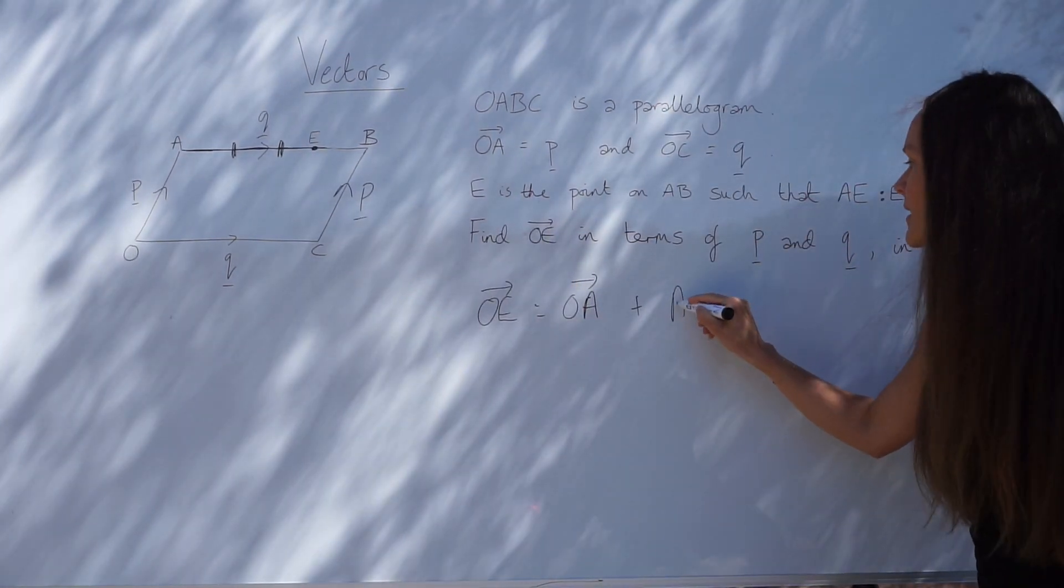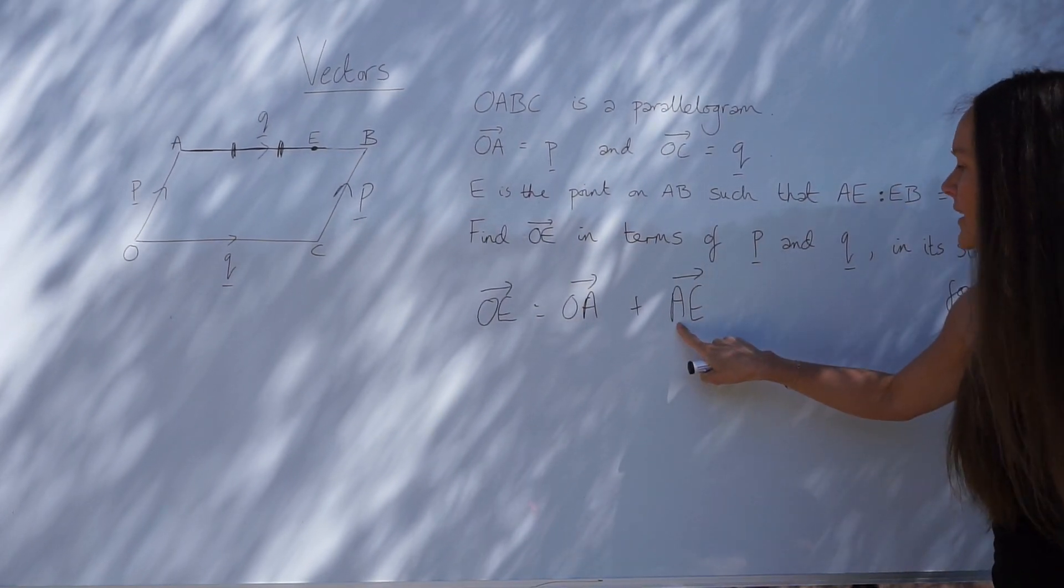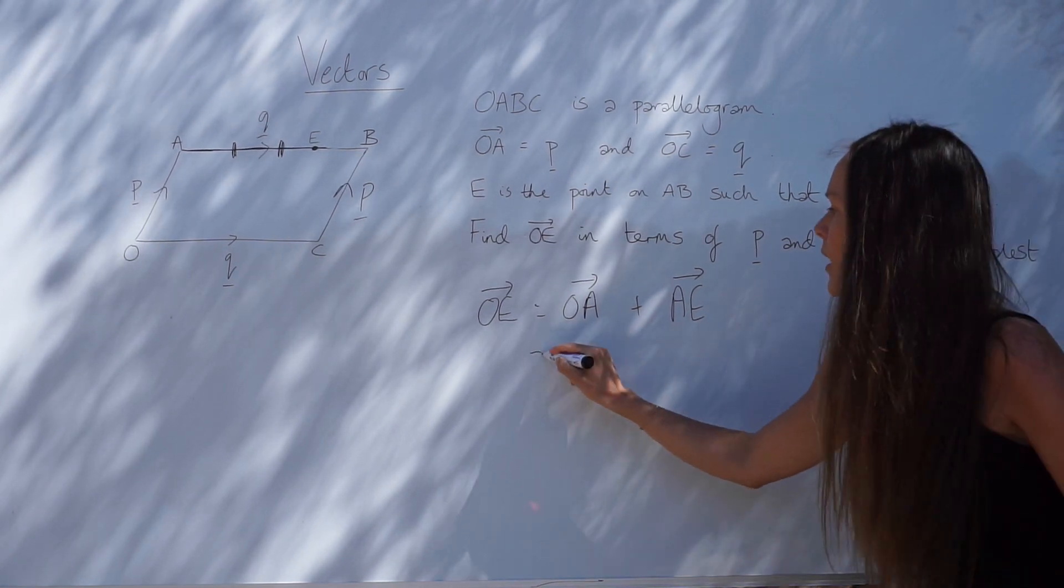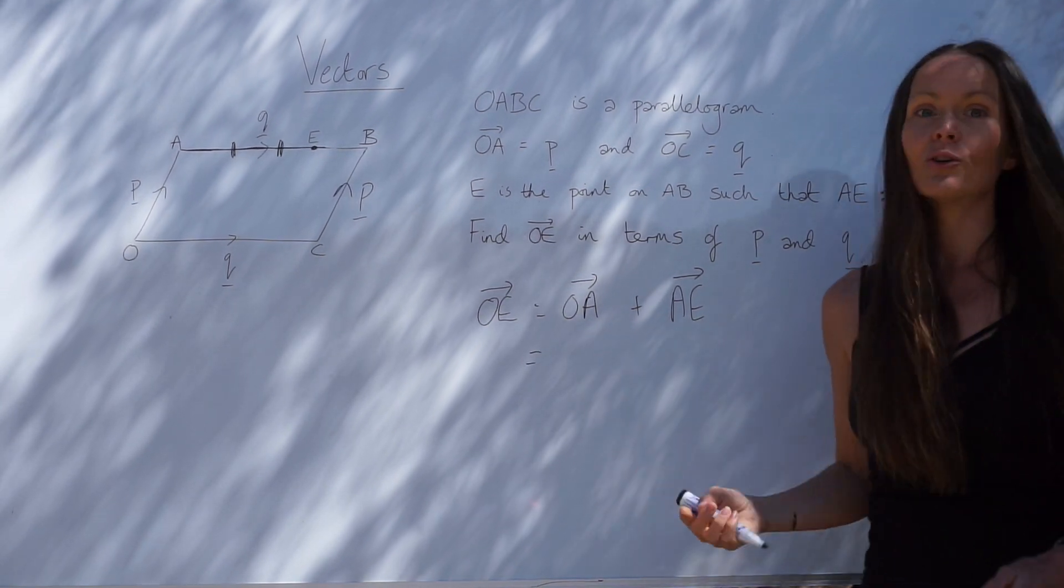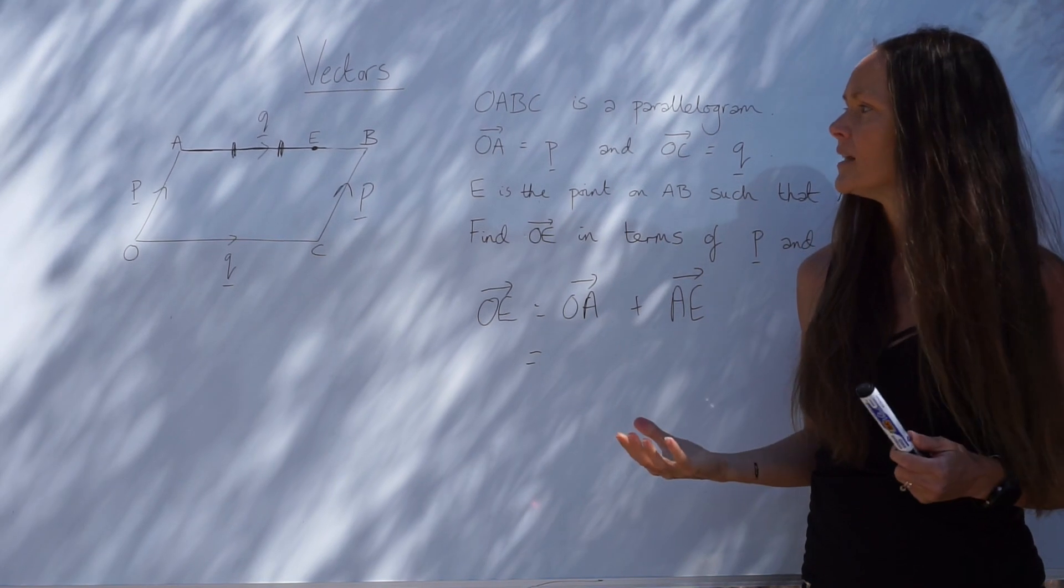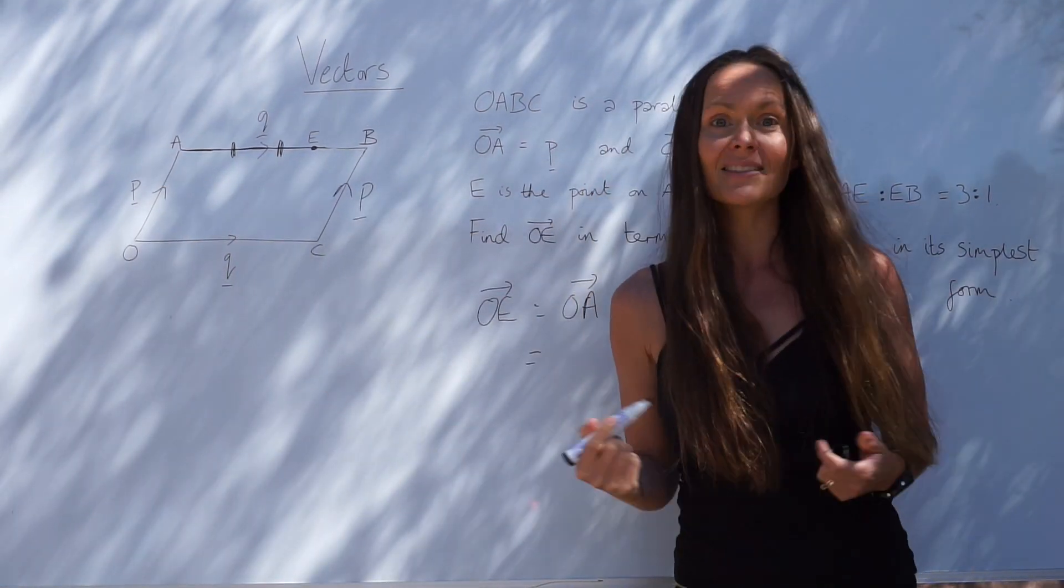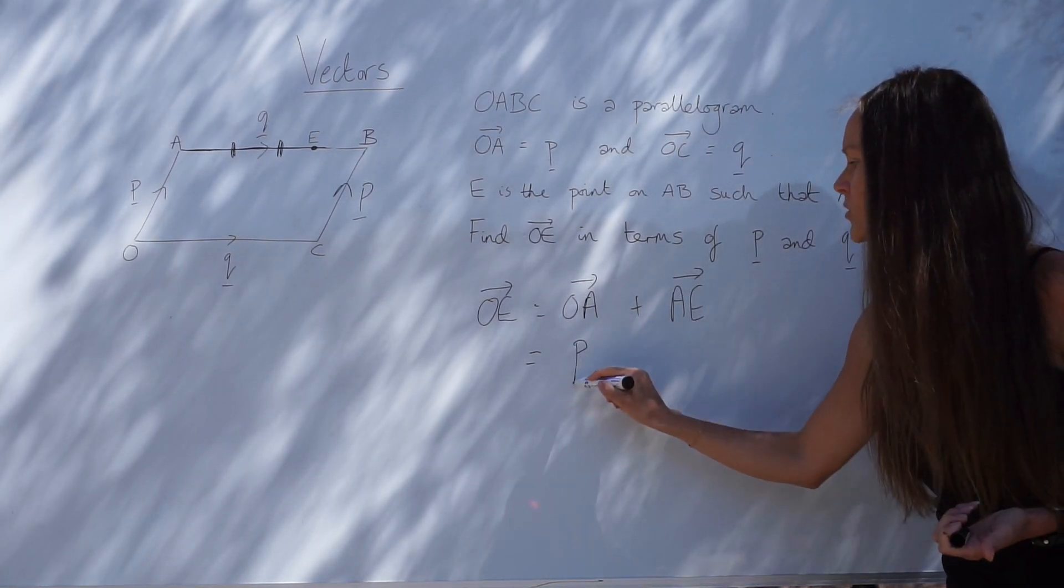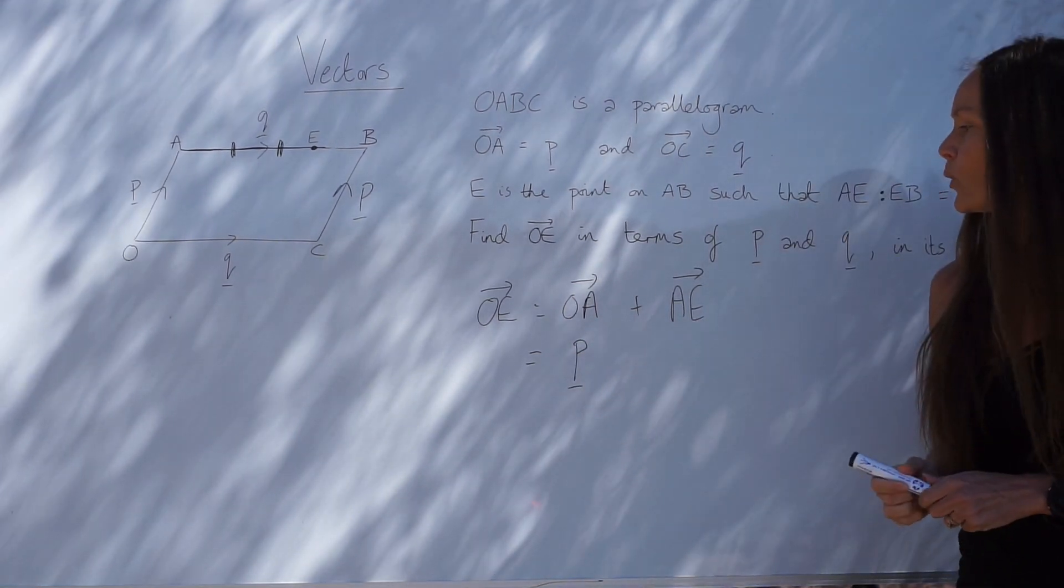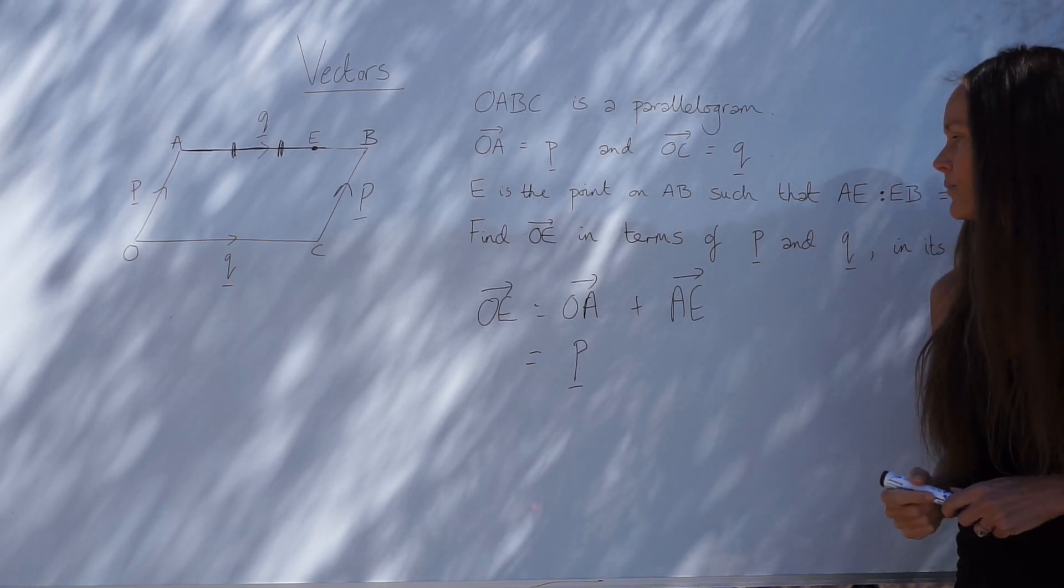So I'm going to write OA with an arrow above, just to show I'm travelling from O to A, and then from A to E. So likewise, AE with an arrow above, just to show A to E. So O to A, we already know that that is vector P. It's labelled on the diagram. So you can replace OA with P. And remember, we usually underline that bold letter to show that it's a vector.